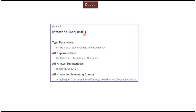Here you can see E. E is nothing but the type of element which Dequeue can hold. It can be an Integer, String, Employee object, User object, etc. The super interfaces of Dequeue are Collection, Iterable, and Queue. There is one sub-interface: Blocking Queue. And here you can see some of the implementing classes of Dequeue Interface, like ArrayDequeue, LinkedList, etc.